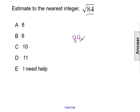And we have to see what two perfect squares is 84 in between. Well, 84 is in between 81 and 100, those two perfect squares. But it is much closer to 81 than it is to 100.